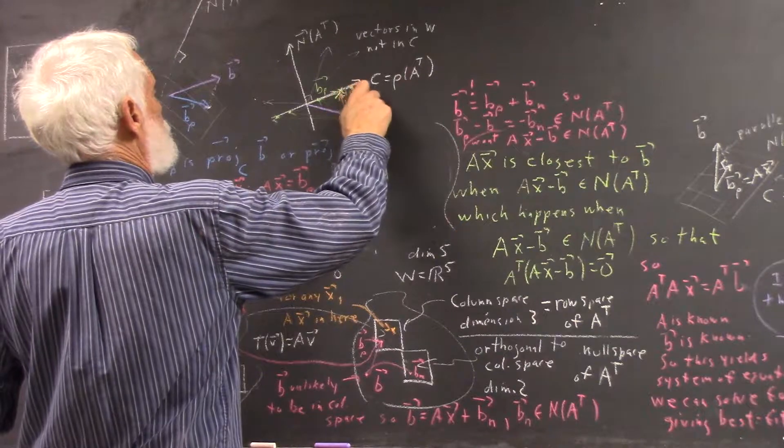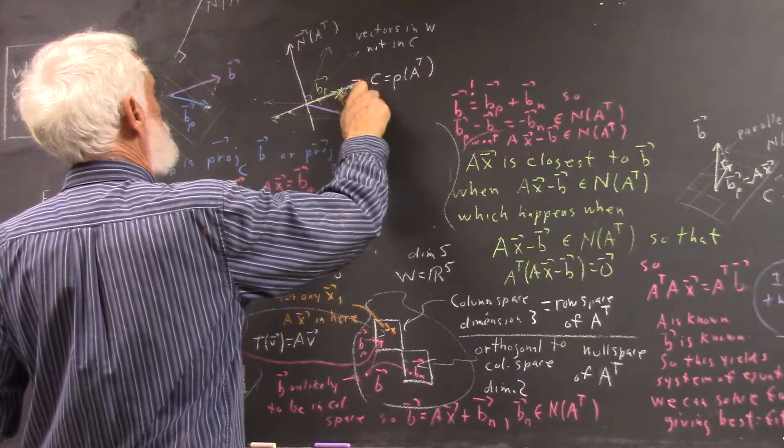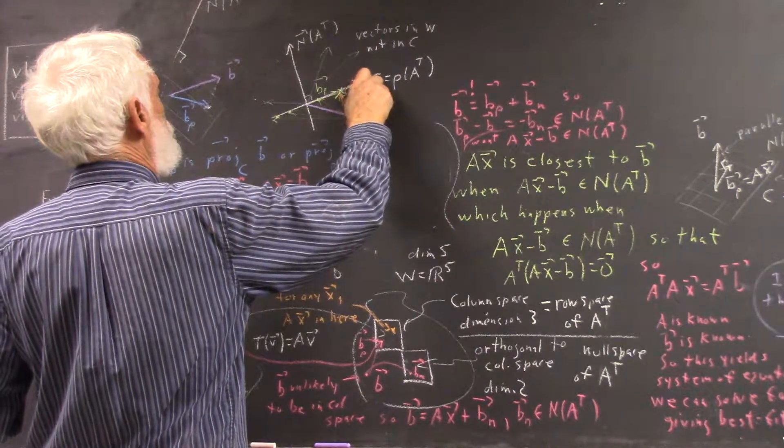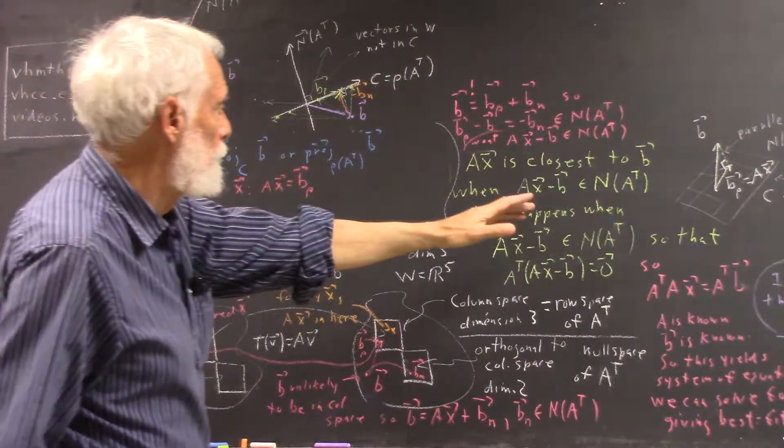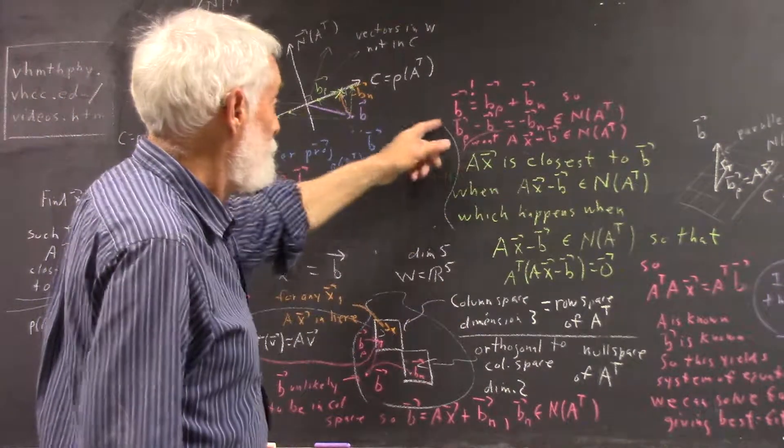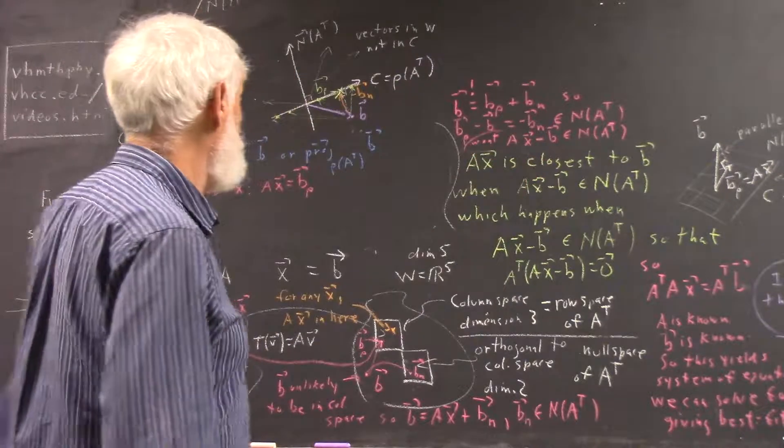B sub rho minus this vector equals B. So this vector, as I've drawn it, would be our minus B sub N. And you can visualize that in terms of what we've done over here, specifically what we've got here.